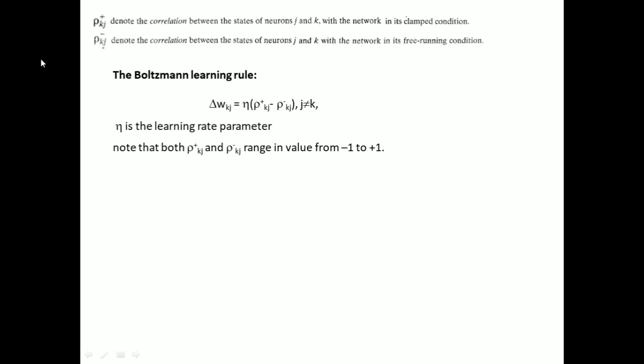Here ρ_kj^+ and ρ_kj^- can take values of plus 1 and minus 1—they range from minus 1 to plus 1. According to the Boltzmann learning rule, Δw_kj = η(ρ_kj^+ - ρ_kj^-) where j is not equal to k, and η is the learning rate parameter.